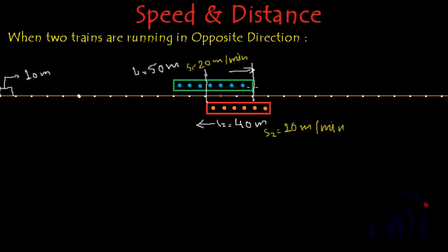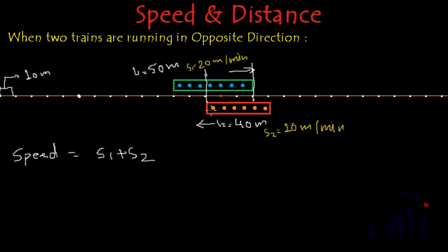The green train and the red train together have covered 30 meters of each other. What is happening here is that the speed at which they are crossing each other is actually the sum of their speeds, S1 plus S2. In one minute the green train travels 20 meters and the red train travels 10 meters, but together they have covered 30 meters of each other. So the effective crossing speed equals the sum of both speeds.